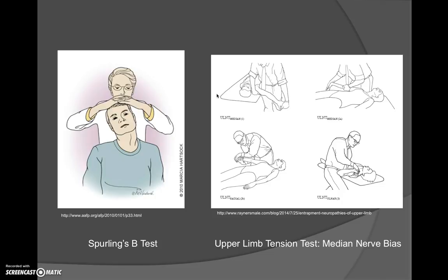To measure active range of motion, use a goniometer. The axis is placed over the center of the patient's head, the stationary arm lines up with the patient's AC joint, and the movement arm aligns with the tip of the nose. If rotation to the affected side is less than 60 degrees, that is a positive finding for the diagnostic cluster.